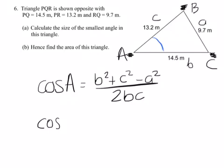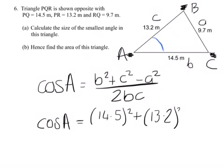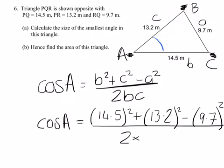We now have enough information to substitute into the cosine rule. So we have cos A equals and side B is 14.5. So that's 14.5 squared plus C squared which is 13.2 squared. Take away A squared, take away A squared which is 9.7 squared. And that's all over 2 times B, 14.5 times C, 13.2.